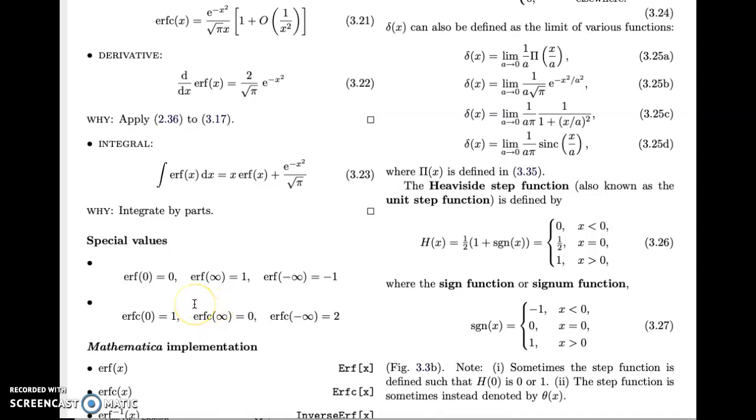As you can see from the graph, erf of 0 is 0. Erf of infinity, as we've seen, is 1, and it's an odd function. So erf of minus infinity is minus 1. And then special values of erfc follow from the definition of erfc, which is just 1 minus erf.